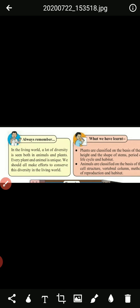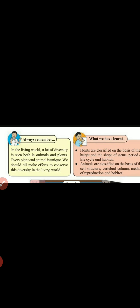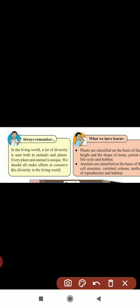Always remember: in the living world, a lot of diversity is seen in both animals and plants, as we have studied in this chapter. Every plant and animal is unique. We should all make an effort to conserve this diversity in the living world - don't cut trees, plant more trees and take care of them. Don't tease or hunt animals. We have to conserve the diversity in the living world.